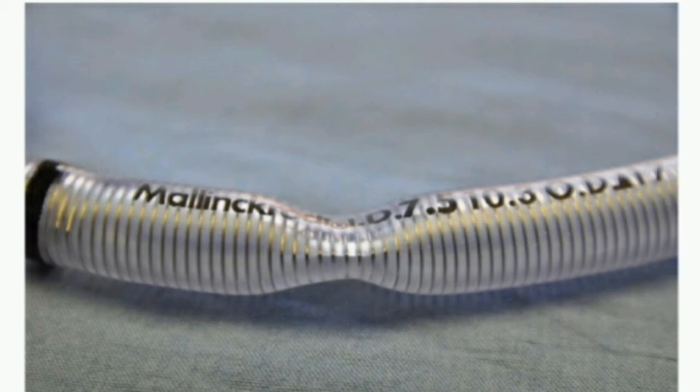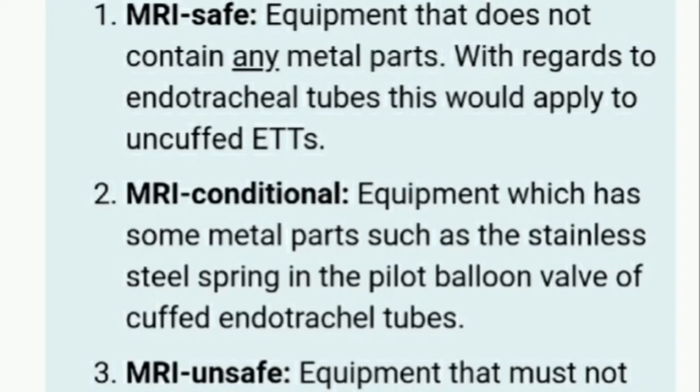For medical equipment, there are three levels of MRI compatibility and safety. The first is known as MRI safe. Equipment that does not contain any metal parts are known as MRI safe. With regards to endotracheal tubes, this would apply to uncuffed ET tubes.